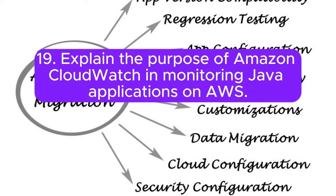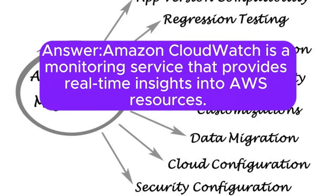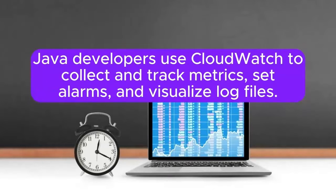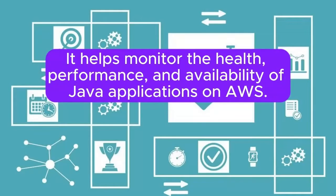Question 19: Explain the purpose of Amazon CloudWatch in monitoring Java applications on AWS. Amazon CloudWatch is a monitoring service that provides real-time insights into AWS resources. Java developers use CloudWatch to collect and track metrics, set alarms, and visualize log files. It helps monitor the health, performance, and availability of Java applications on AWS.